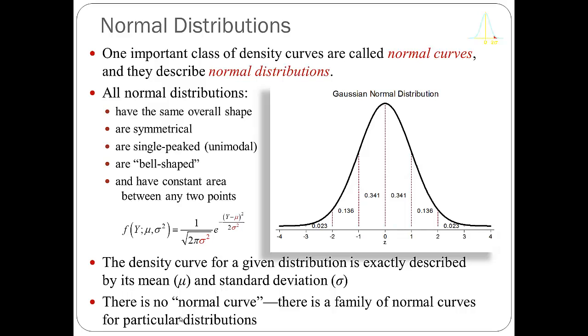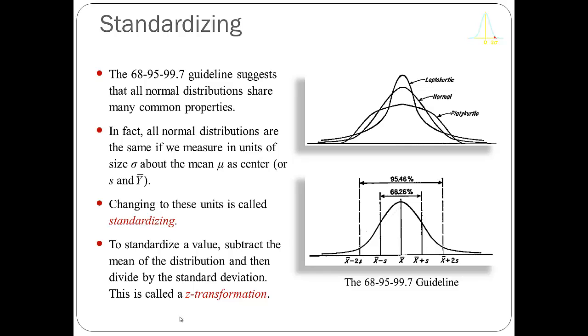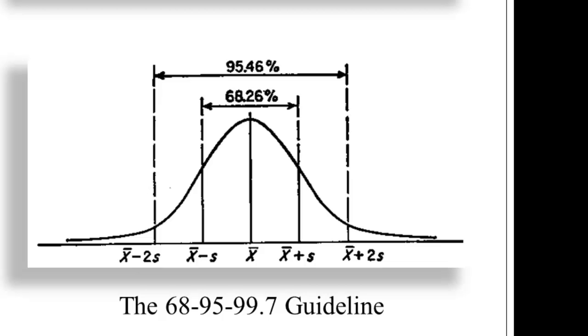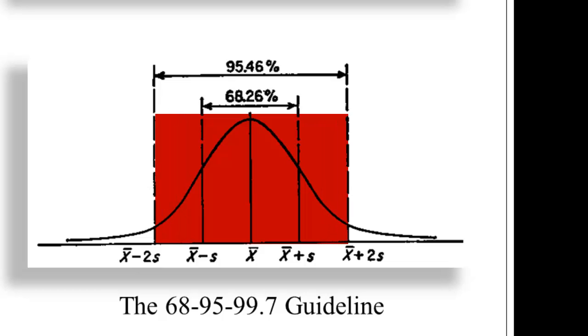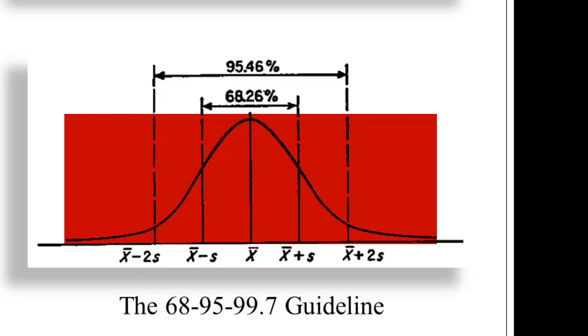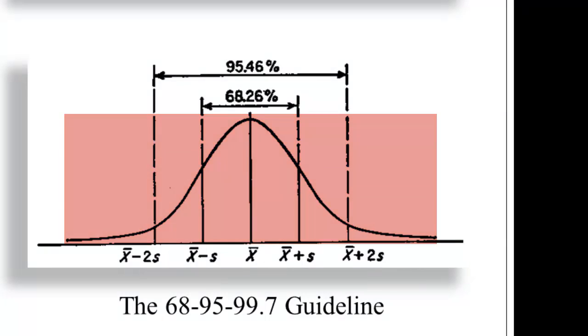There's a very regular pattern to the area under this curve between any two points consistent with all normal distributions. This lets us come up with the 68-95-99.7 guideline. Plus or minus one standard deviation unit covers approximately the middle 68% of the distribution. Two standard deviation units capture approximately 95%. Plus or minus three standard deviations capture about 99.7% of the distribution.